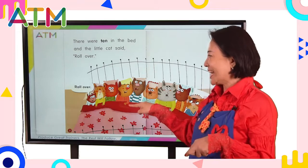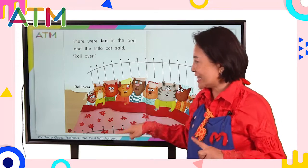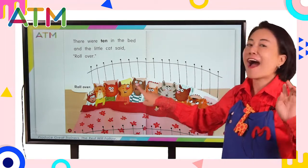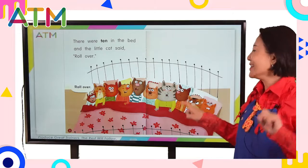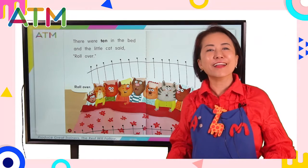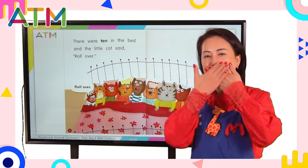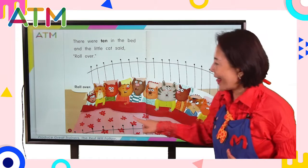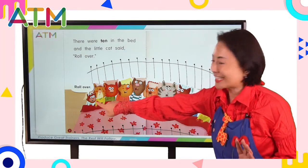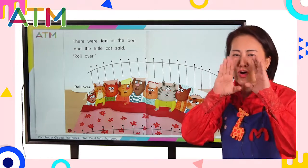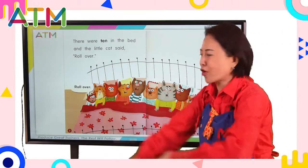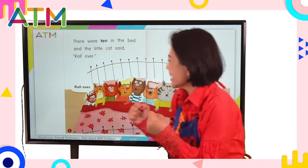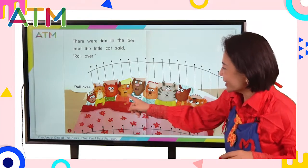There were ten in the bed — let's count all together: one, two, three... seven. So there were ten in the bed, and the little cat said, 'Roll over.' You know why she said roll over? Because it seems it's very, very crowded. You can see the face — it's so crowded! They are face to face. Because it's so crowded, the little cat said 'Roll over!'